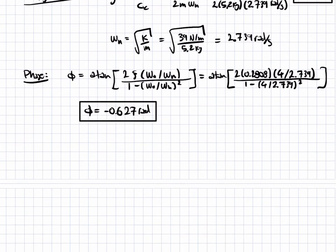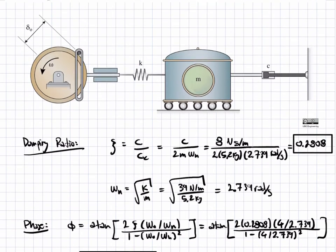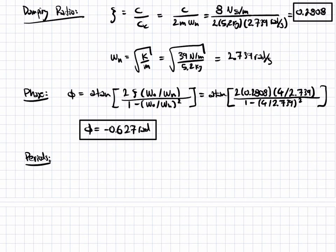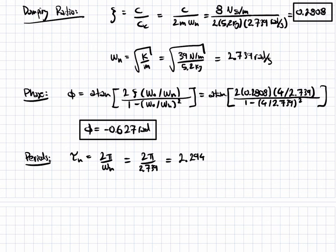Next, we look at the various time periods. First, the natural period of oscillation tau_n — this is what the period would be with no forcing, just free vibration. The natural period tau_n is equal to 2 pi over the natural frequency. With omega_n equal to 2.739 radians per second, our natural period is 2.294 seconds.